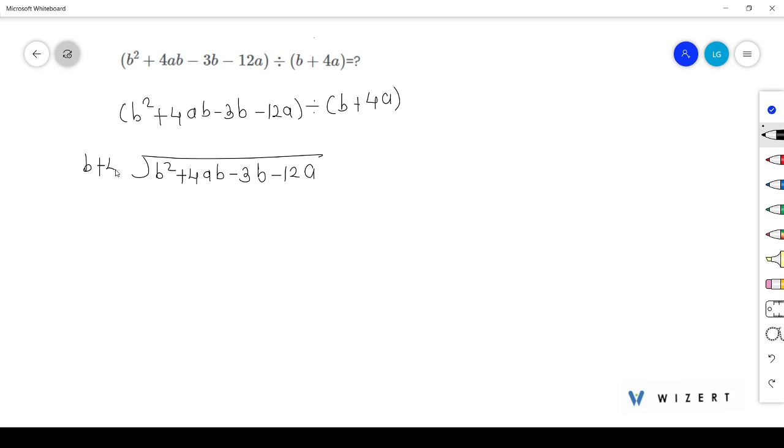Now to get b² first, we need to multiply this by b. So take b.